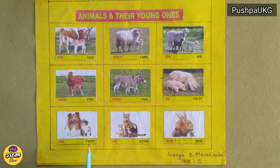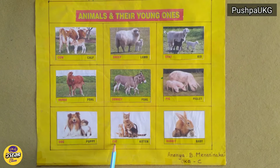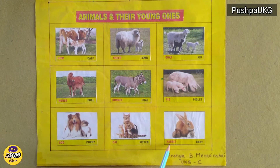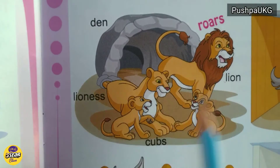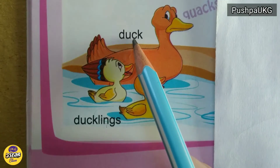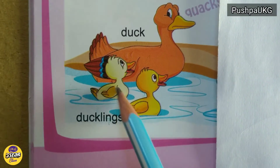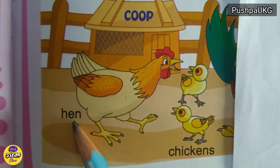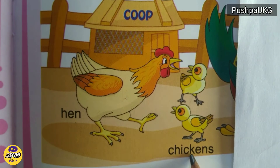Dog, puppy. Cat, kitten. Rabbit, baby rabbit. Lion, cubs. Duck, ducklings. Hen, chickens.